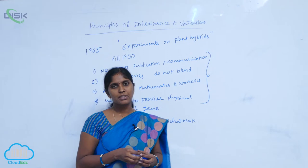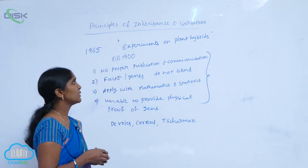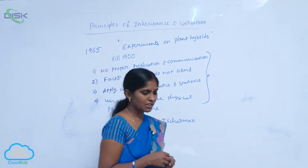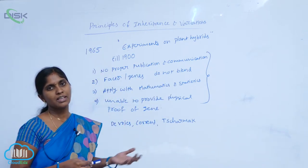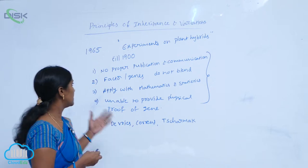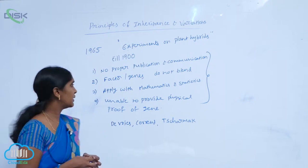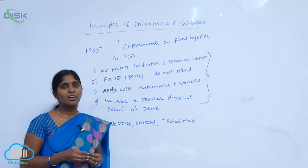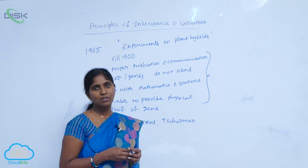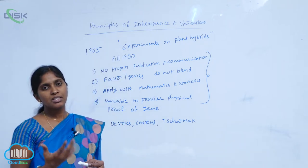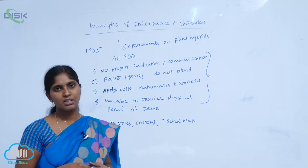Mendel published his experiments in the year 1865 in the publication 'Experiments on Plant Hybrids', but his experiments were not accepted by his contemporaries. The reasons they were not accepted include no proper publication and communication, which was one of the drawbacks. He also gave the idea of factors and genes with two contrasting alleles that remain separate over time and do not blend — that concept was not accepted by the scientists.